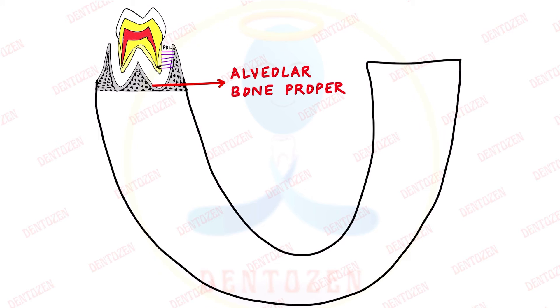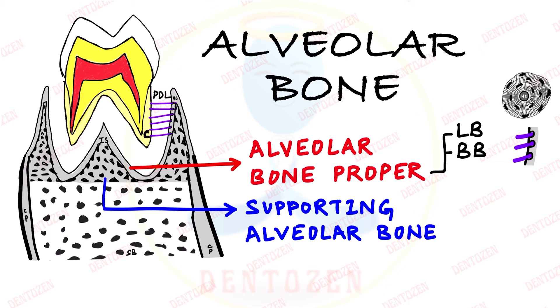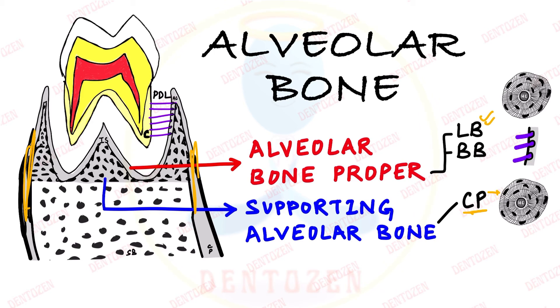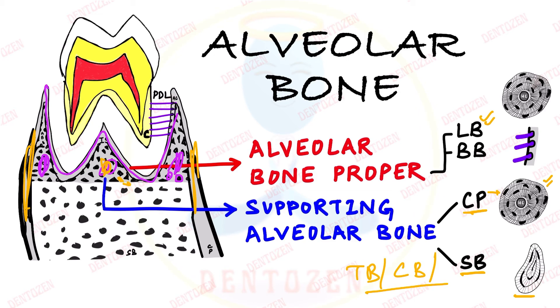The second part of alveolar bone is supporting alveolar bone, which is further of two parts. The outer and inner plates of this bone are known as cortical plates. Cortical plates under the microscope show structures similar to lamellated bone — they also show Haversian systems. The second part of supporting alveolar bone is the spongy bone, present between the cortical plates and alveolar bone proper. Spongy bone contains trabeculae — small pieces of bone surrounding marrow spaces — and is also called trabecular or cancellous bone.